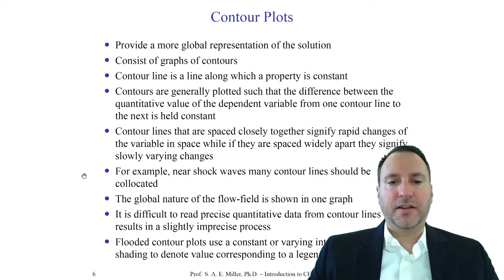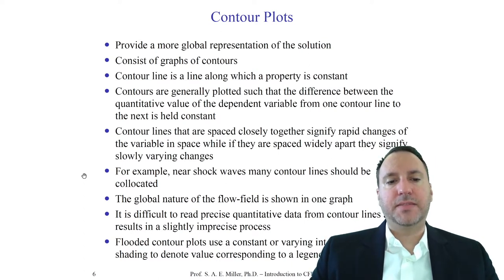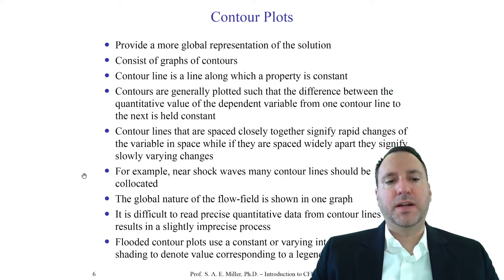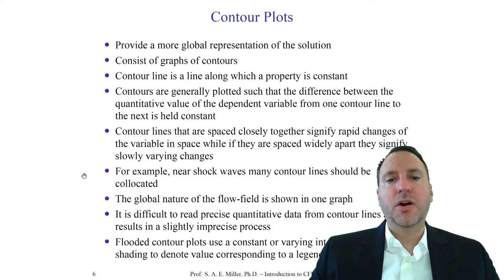The global nature of the flow field can be completely shown in one graph through a series of contour plots. The downside is that it's difficult to read precise quantitative data from the contour lines, which might result in a slightly imprecise process. Contours may also use interpolation or complicated graphing techniques to project the contour field from the original numerical data through numerical algorithms onto a 2D screen or piece of paper. Flooded contour plots use constant or varying intensity of color shading to denote values corresponding to a legend. You can mix contour lines, color gradients, and overlaid velocity vectors to create aesthetically pleasing composite plots.